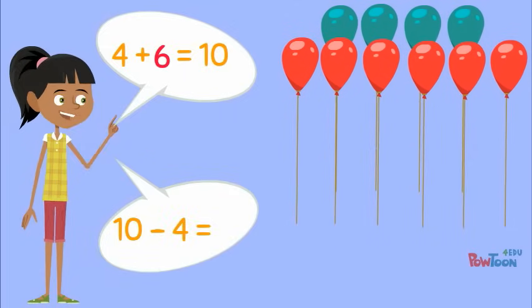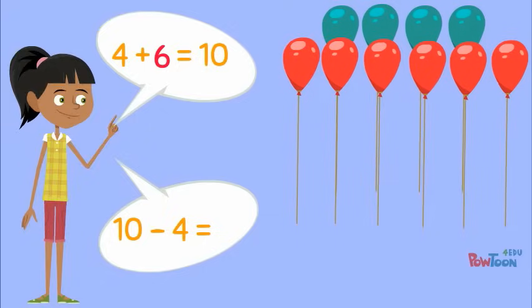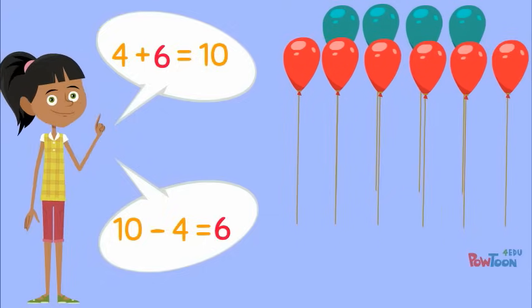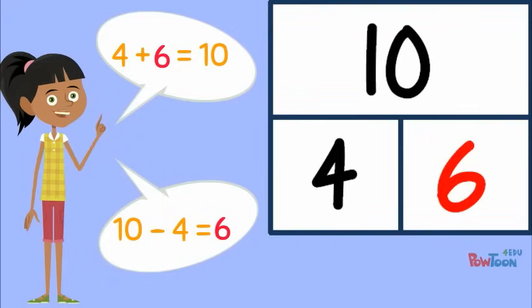Or I can subtract: 10 balloons in all minus the 4 green balloons equals 6 red balloons. So the missing part was 6.